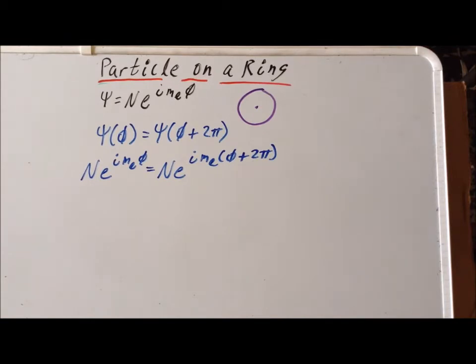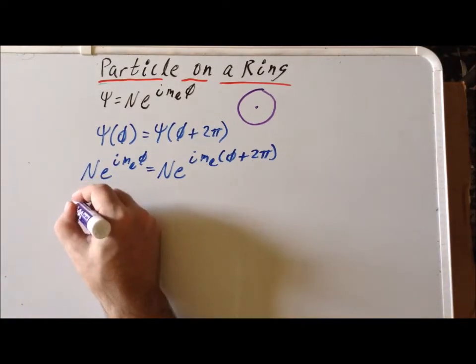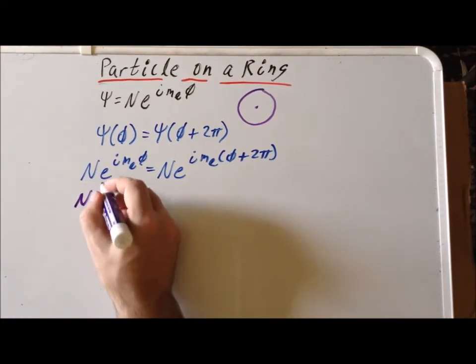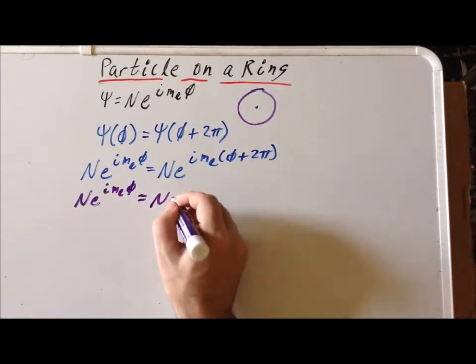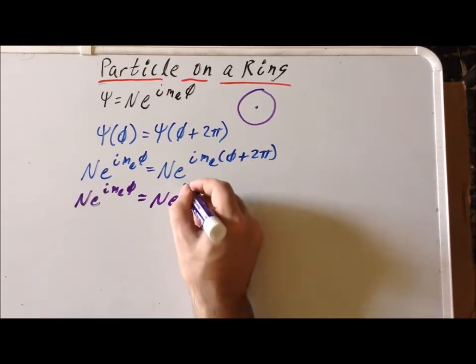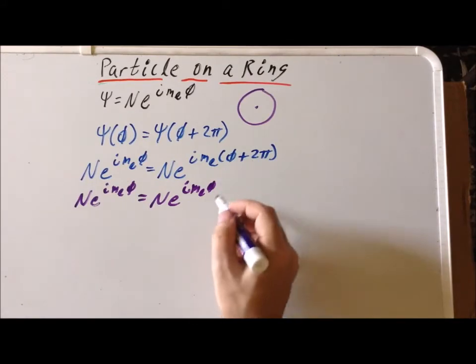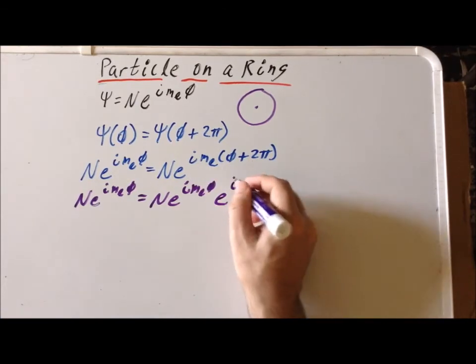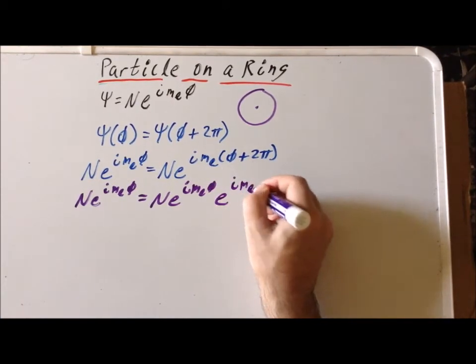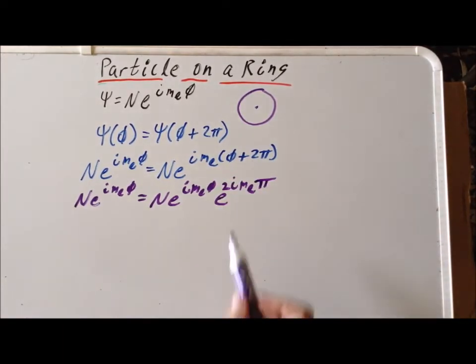Next, I'm going to use the properties of exponents to rewrite the right-hand side. The left-hand side stays exactly the same: N times e to the i m sub l phi equal to N, so e to the i m sub l phi. So now I multiply. So whenever we add the exponents, so we're multiplying by e times i m sub l times 2 pi. So put the 2 there and the pi at the end. So we simply use the properties of exponents here to simplify the right-hand side.